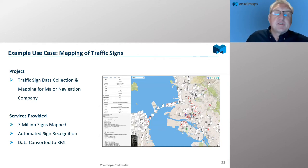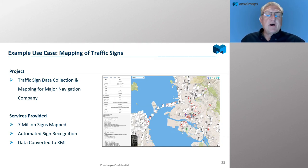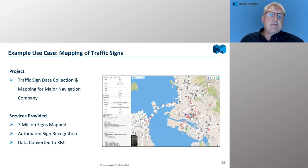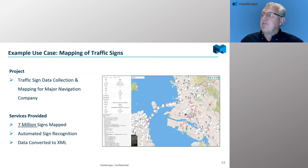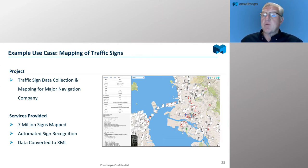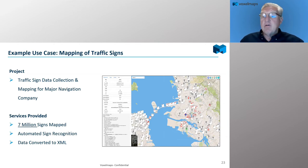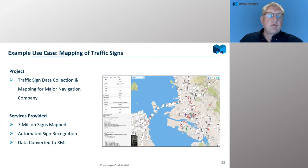A couple of projects we've done: in one case, a navigation mapping company wanted collection of traffic signs throughout the San Francisco area. We took our systems, drove the streets, did automated sign recognition and extraction using VoxelMaps AI/ML technology, and exported it all to XML for delivery to the customer. Over 7 million signs were mapped as part of this process — quite a few. This shows our ability to scale for larger projects, whether it's a small municipality or a huge statewide or nationwide collection.